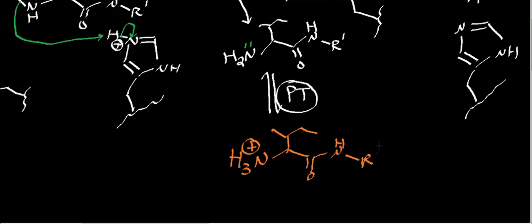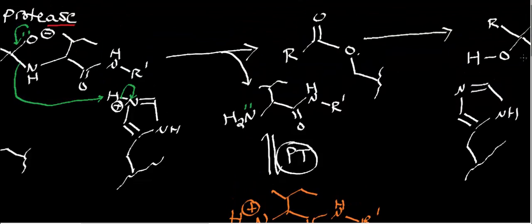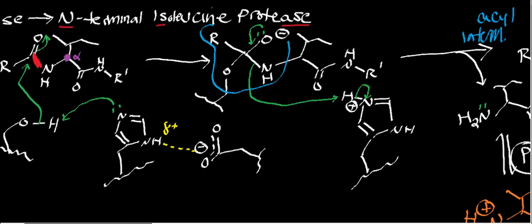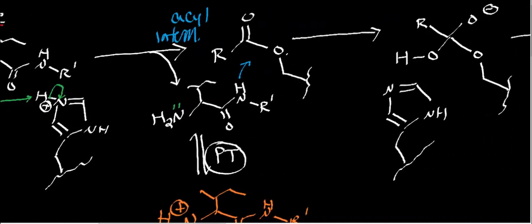Now we have an important intermediate — this is called an acyl-enzyme intermediate, and that's a common exam question. To clarify: the earlier intermediate has sp3 geometry and is called a tetrahedral intermediate; this intermediate has sp2 geometry and is trigonal planar, so it's called an acyl-enzyme intermediate. Because it's an acyl intermediate, it's primed for another nucleophilic acyl substitution.